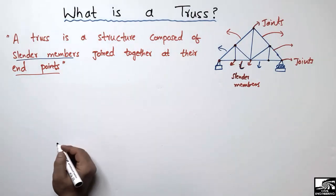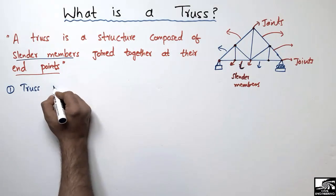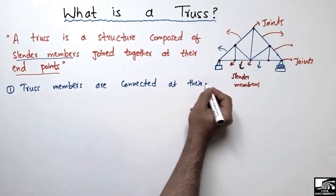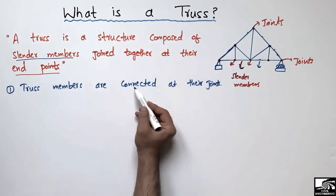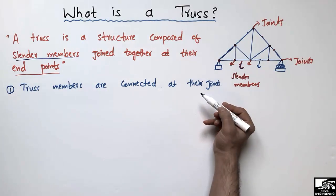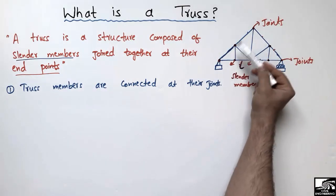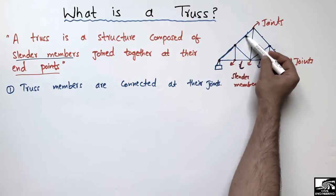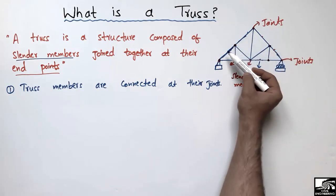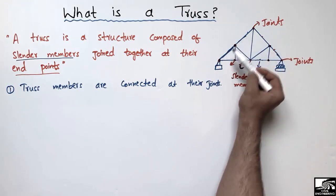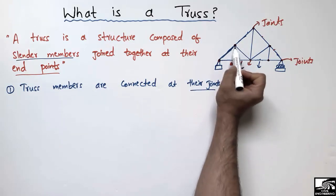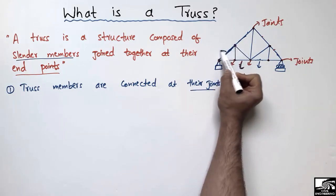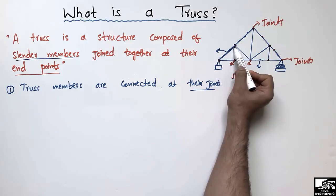The first condition of a truss is that truss members are connected at their joints only. You can see here — this is a joint and this is a joint, so this member is connected at their joints only.